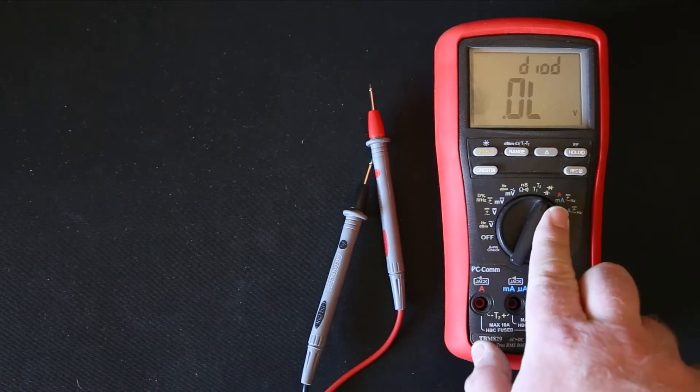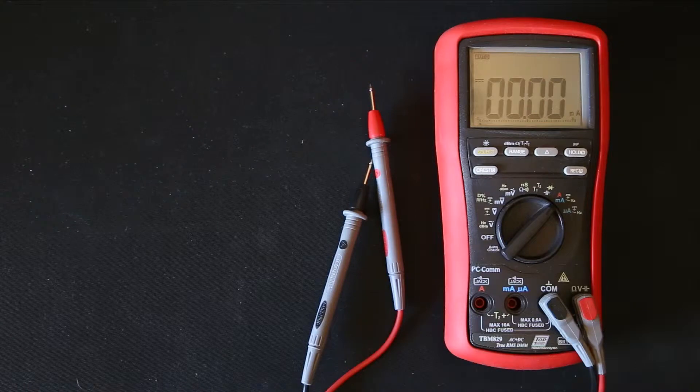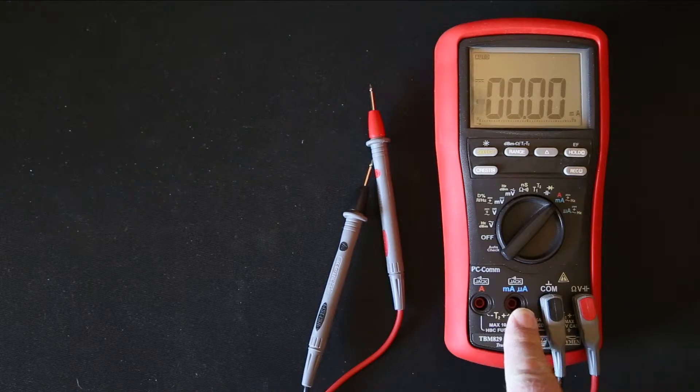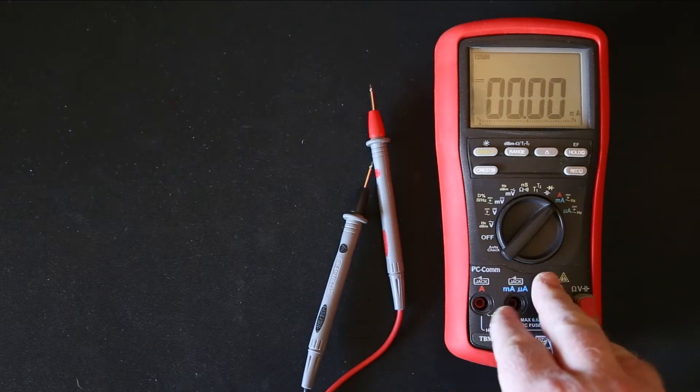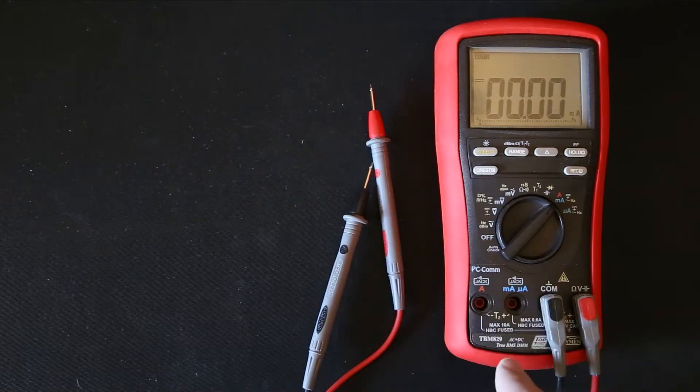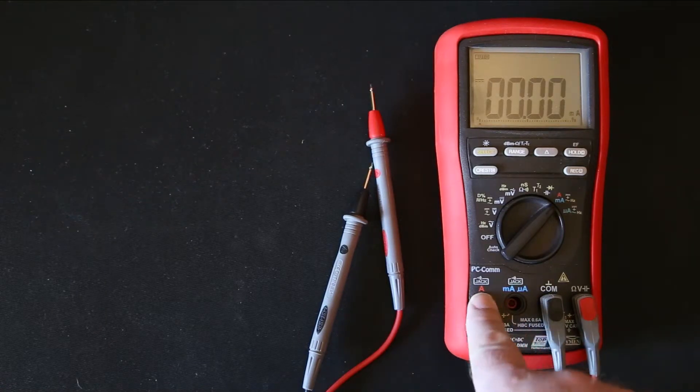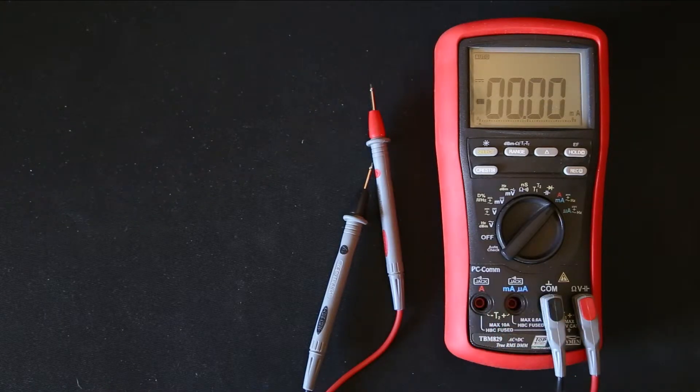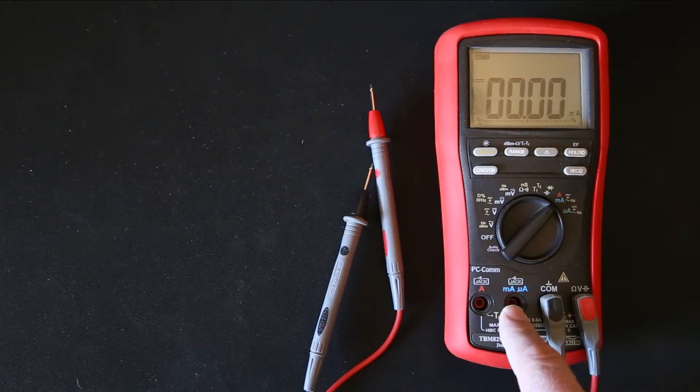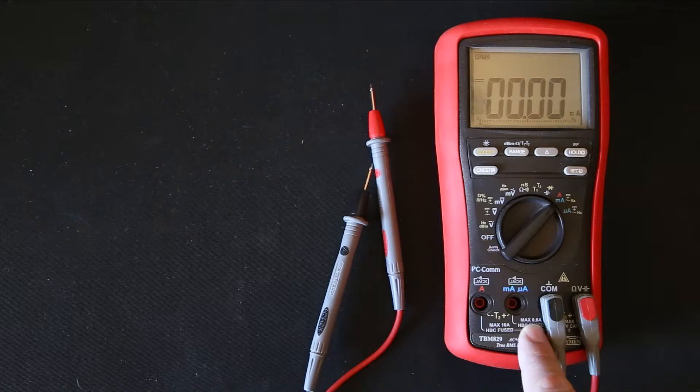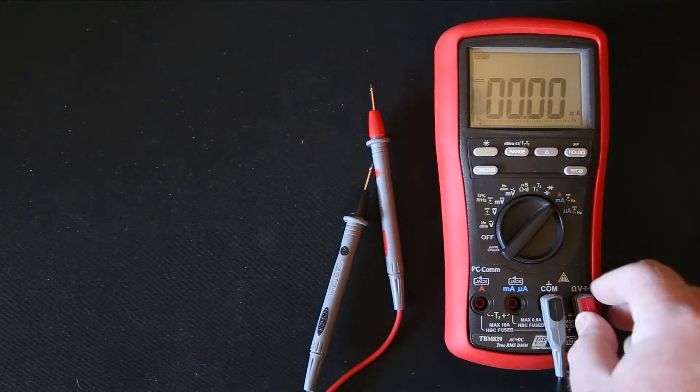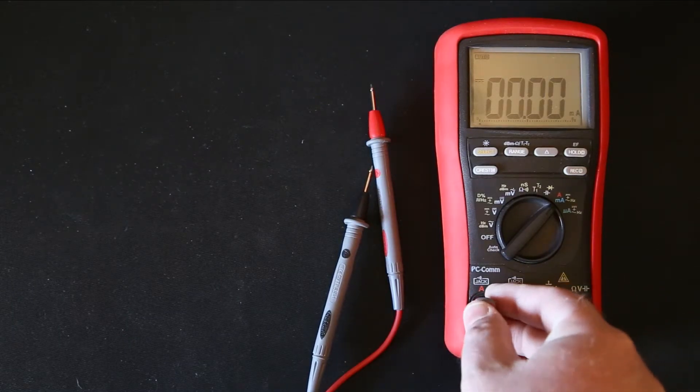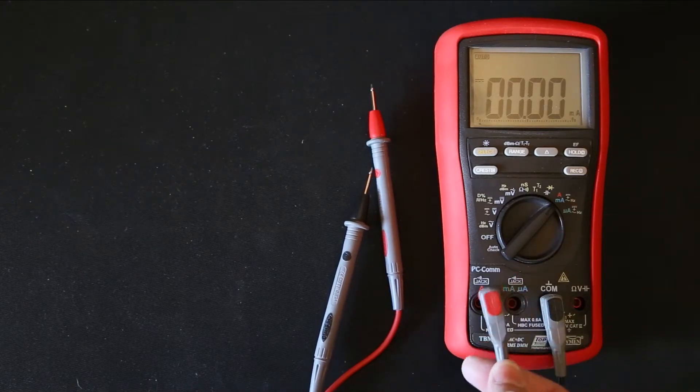Now as for current, current works a little bit differently on meters. This meter specifically has got two current jacks: your amps and your milliamps and microamps. Current is basically, like if you plug into the amps jack, this specific unit is designed to measure 10 amps on the amps jack. This will be your 1 to 10 amps measurement. Your milli and microamps, on the other hand, are designed for measuring like 0.6 amps and below.